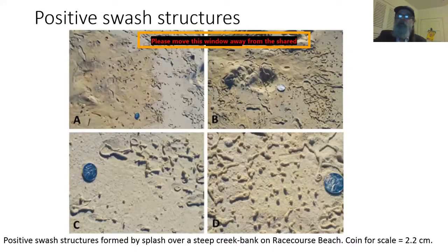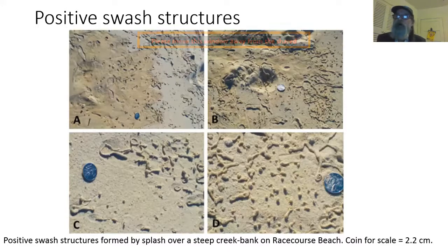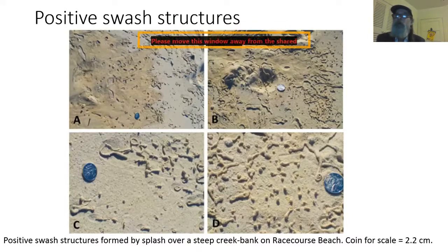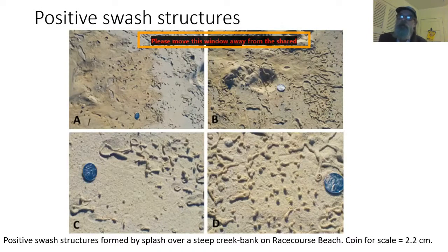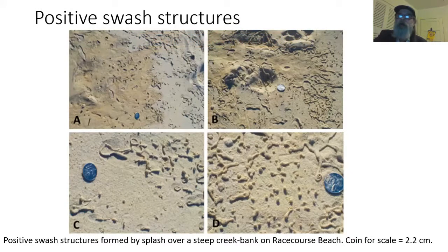Here are some positive swash structures. These are formed by broken-up films of water-sand slurry deposited by splashing onto dry sand, where a swash sheet washes up a creek bed and splashes over the side. Instead of being negative craters, these have positive relief — they stand up above the dry sand. Some are droplet-shaped, some are spatulate or tongue-shaped, some are irregular, and some are elongated.